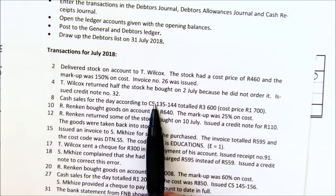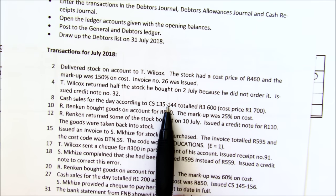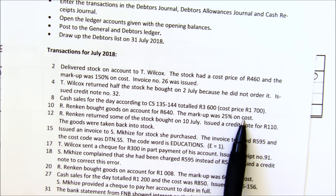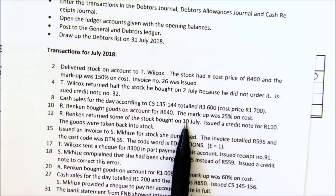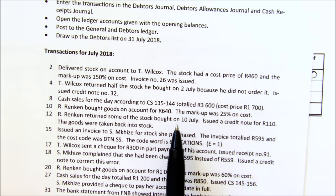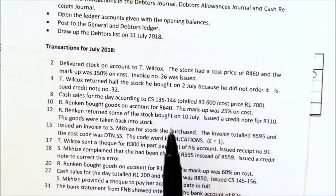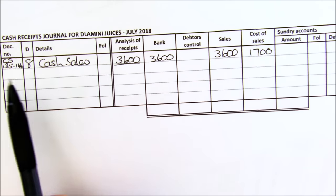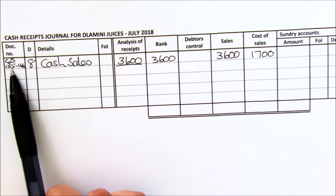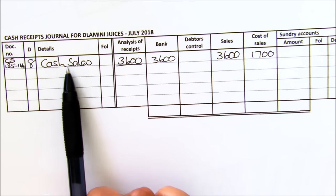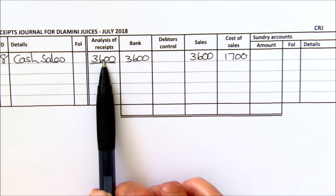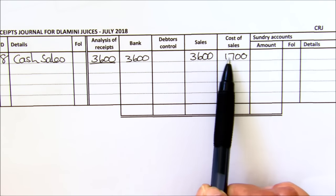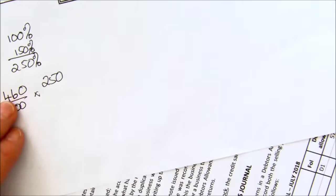On the 8th there are cash sales for the day. This is back into your cash receipts journal — I want you to do that one on your own. Then Rankin bought goods on account with a markup of 25%, and then Rankin returned some of the stock on the 10th. Please freeze the frame if you don't have the exercise and do those three entries. For the cash sales, in the cash receipts journal they gave you the cash slips or cash register tapes. You can write cash sales, cash, or just sales. The money must go into the analysis, into the till, and then you deposit into the bank. You were given the sales and the cost of sales.